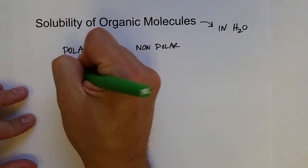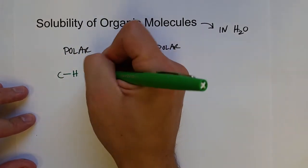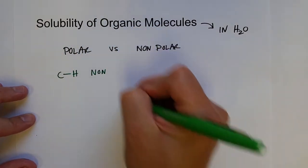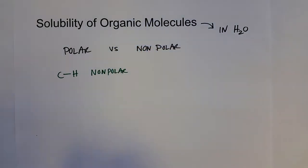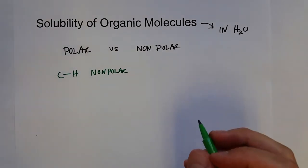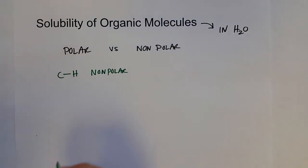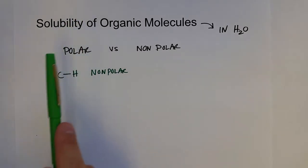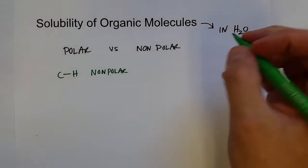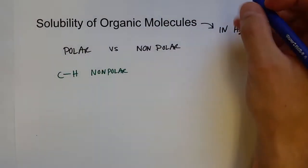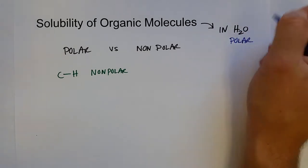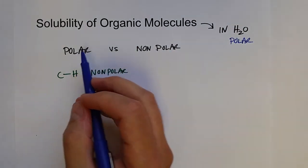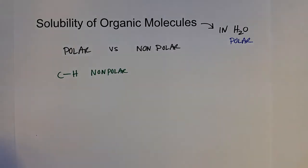We know that carbon-hydrogen bonds are nonpolar. So if it is a straight hydrocarbon — whether it be an alkane, alkene, or even an aromatic — it's going to have low solubility. Because, if you remember when we talked about solutions, it's 'like dissolves like.' And water is very polar. So the more polar the organic molecule is, the higher the solubility it will have in water.